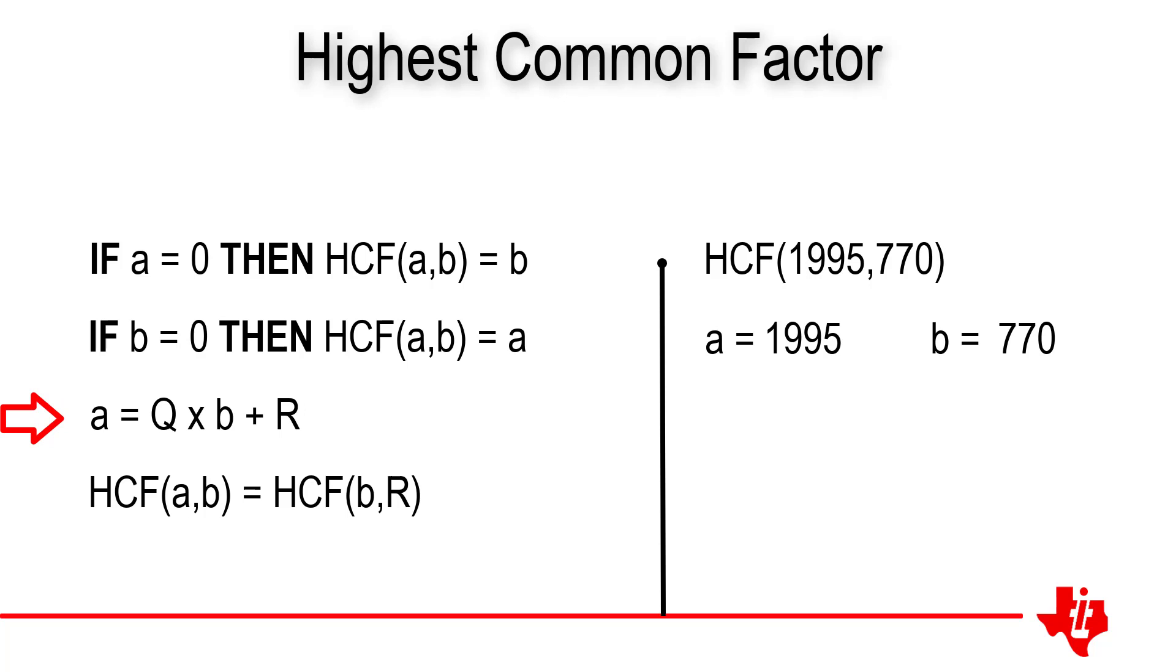The third line of the algorithm requires us to divide 1,995 by 770. Well, that goes in about two and a bit times. So the quotient is 2 and the remainder is 455. So that's the third line of the algorithm complete. The final line of the algorithm states that the highest common factor of 1,995 and 770 will now be the same as the highest common factor of 770 and 455. So our problem is a little bit simpler.